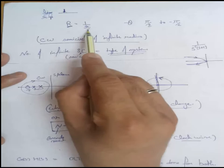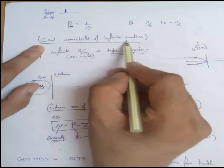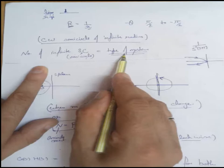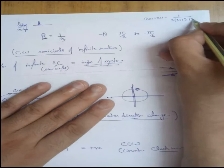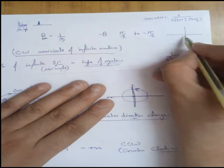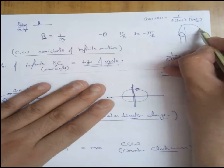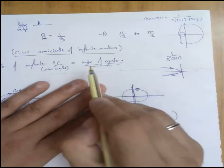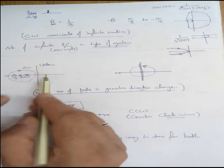R is inversely proportional to small r, and theta varies from π/2 to -π/2. We draw the clockwise semicircle of infinite radius. The number of infinite semicircles depends on the type of system. For transfer function GS·HS = 1/(S(S+1)), the polar plot and its mirror image form the Nyquist plot. This is a type 1 system with one pole at origin, giving π encirclement.